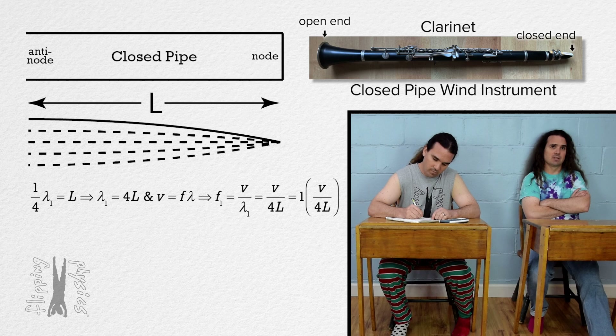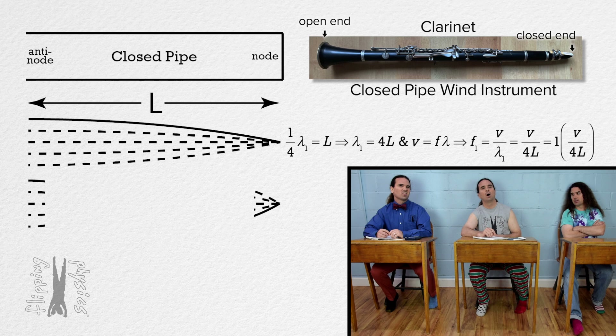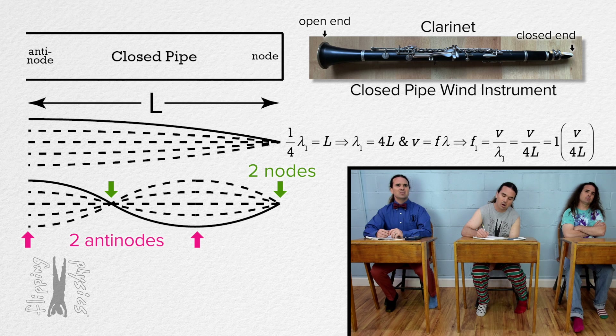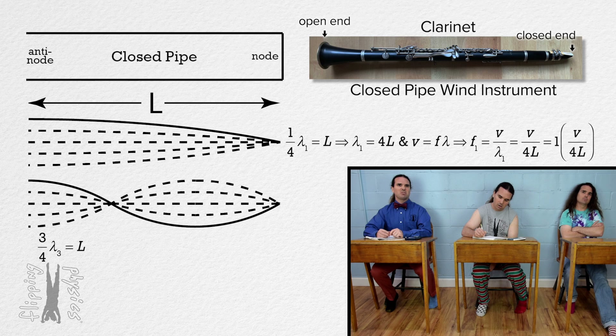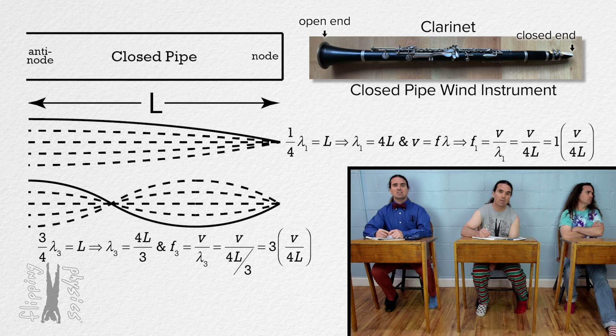For the next possible standing wave pattern, there still has to be a node at the closed end and an anti-node at the open end, so we add one node and one anti-node. From left to right it goes anti-node, node, anti-node, node, all equally spaced apart, meaning there are three-fourths of a wavelength in the length of the pipe. The wavelength equals 4L over 3, and the frequency equals speed divided by 4L/3, which means frequency equals three times the quantity speed divided by 4L.